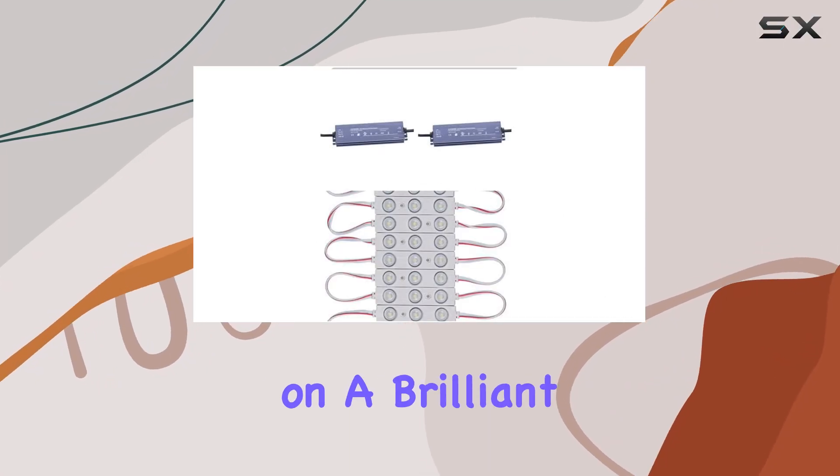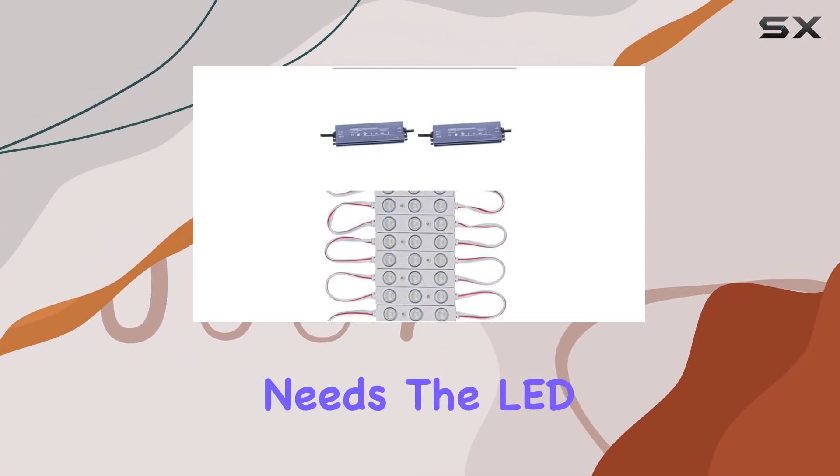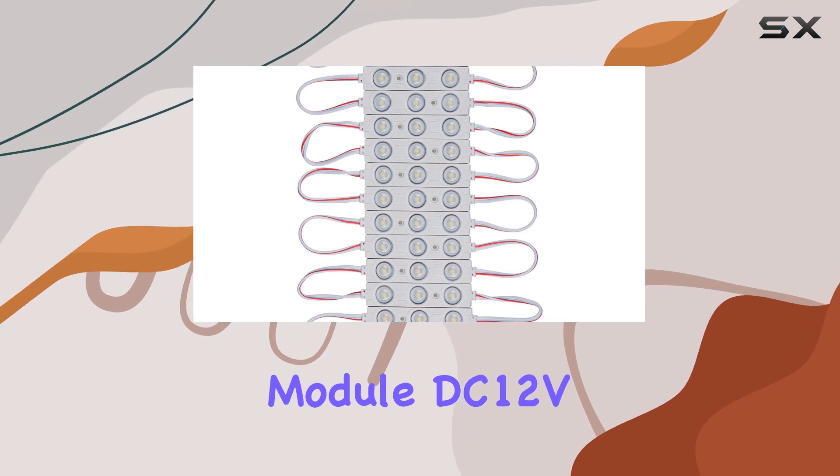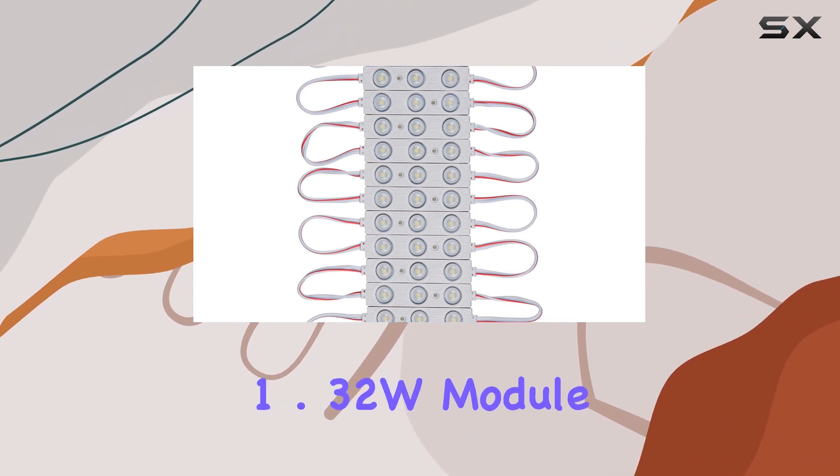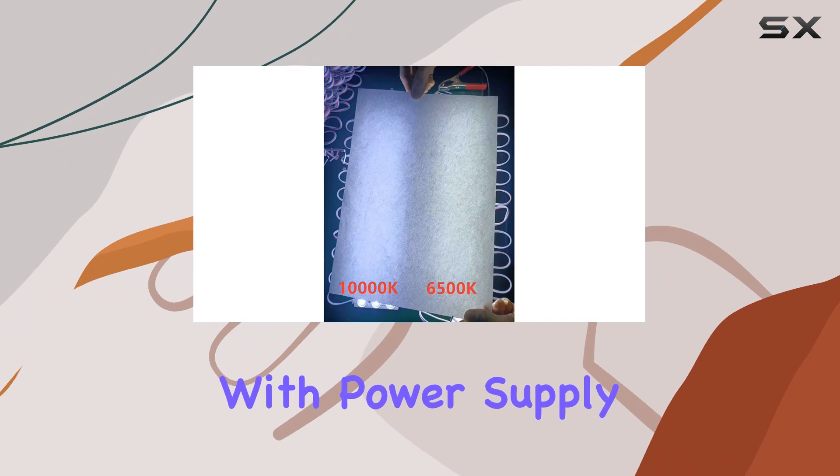Today, we're shedding light on a brilliant solution for all your lighting needs. The LED Module DC12V Cool White 10,000K 1.32W Module Strip Light with Power Supply.